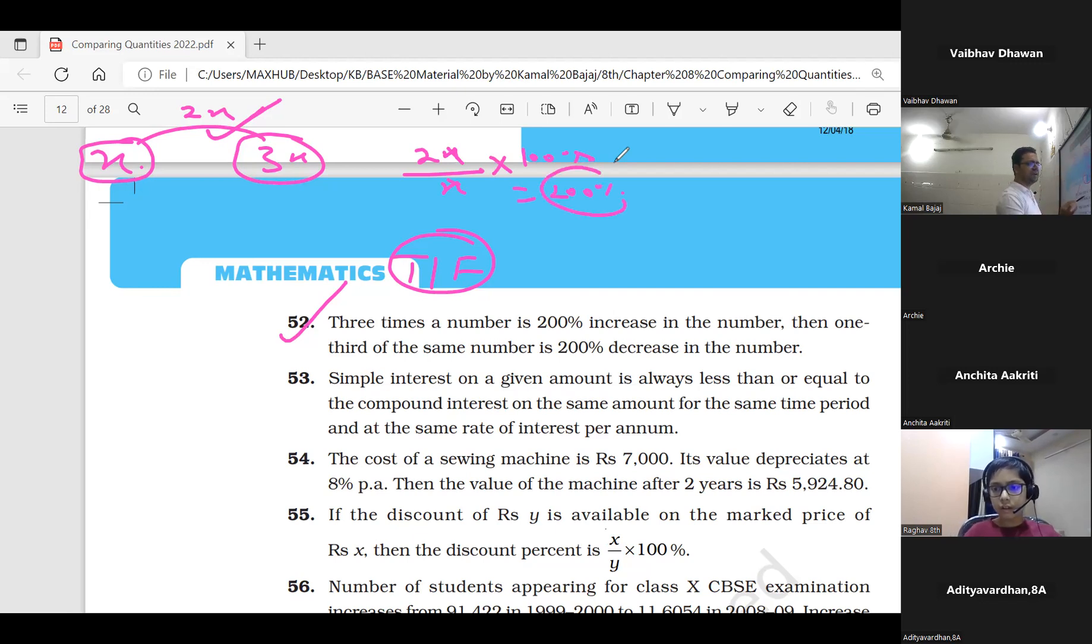Now the question asks: if we make the number one-third, will there be a 200% decrease? We assumed the number was x. When we do one-third of it, meaning x divided by 3...